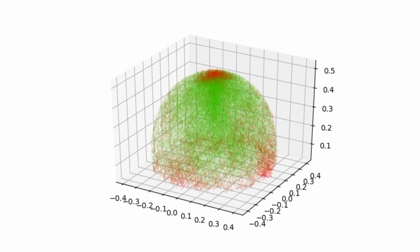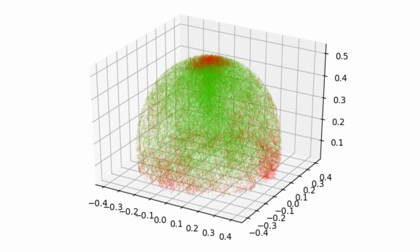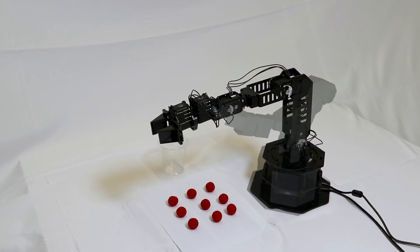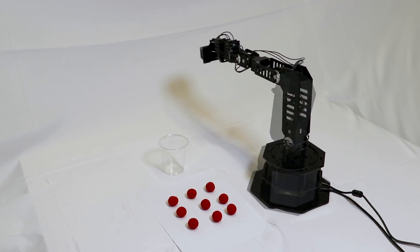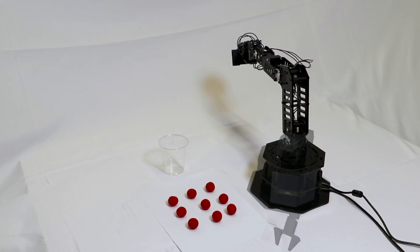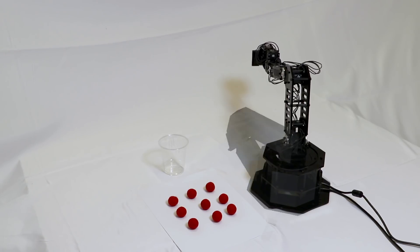The robot then used a deep sequence-to-sequence model to create a self-model consistent with the data that it had collected. Here you can see some of the initial self-models overlaid on top of the real robot. Initially, the models were very inaccurate. The robot had no clue what it is or how its joints are connected.